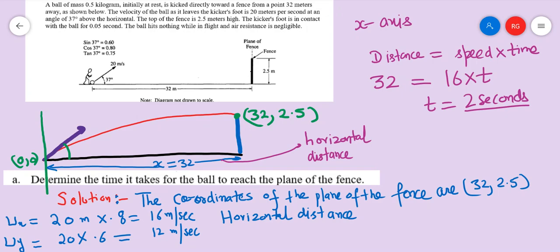So let's first organize the data. We are given the horizontal component of the velocity, which we can calculate using cos theta, which is u cos theta. Then you can calculate the vertical velocity also, which is u_y.